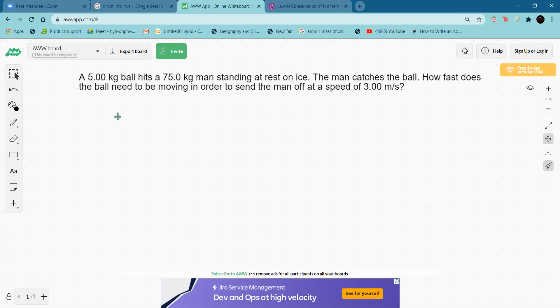A 5 kg ball hits a 75 kg man standing at rest on ice. The man catches the ball. How fast does the ball need to be moving in order to send the man off at a speed of 3 meters per second?